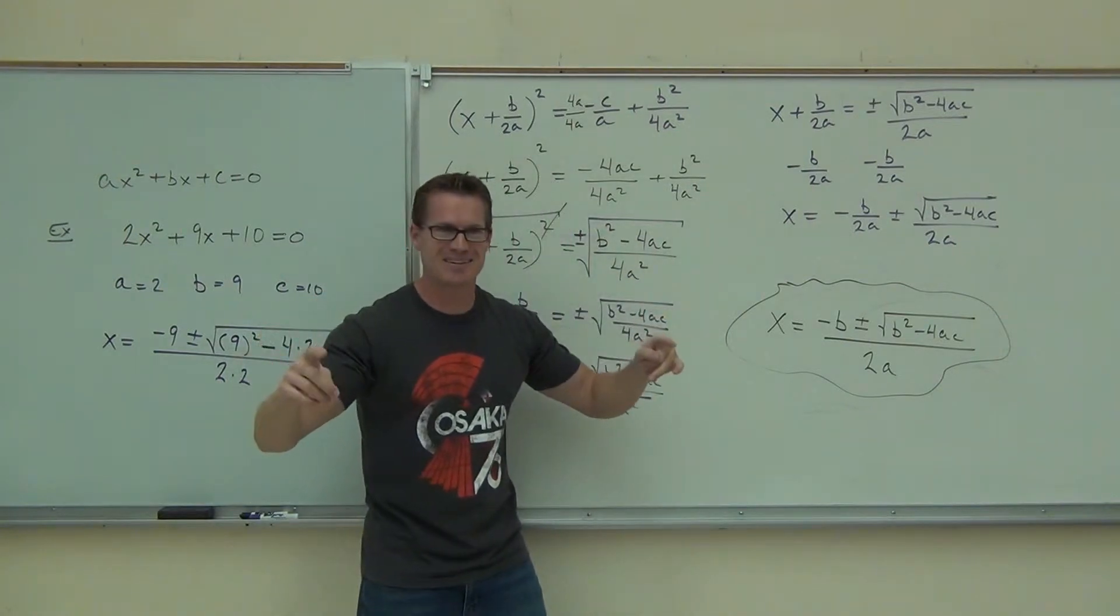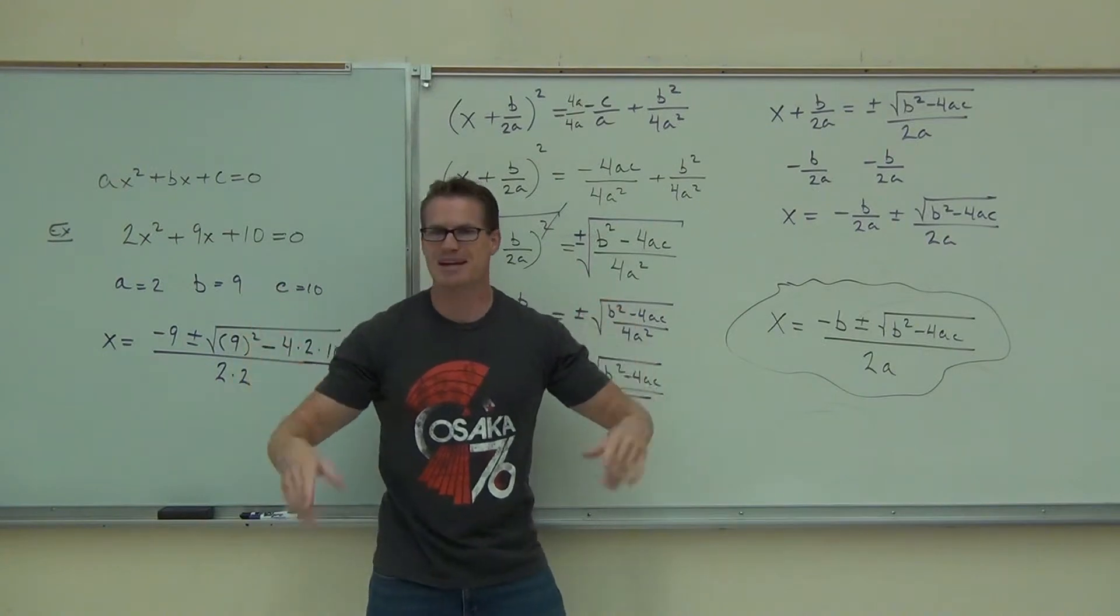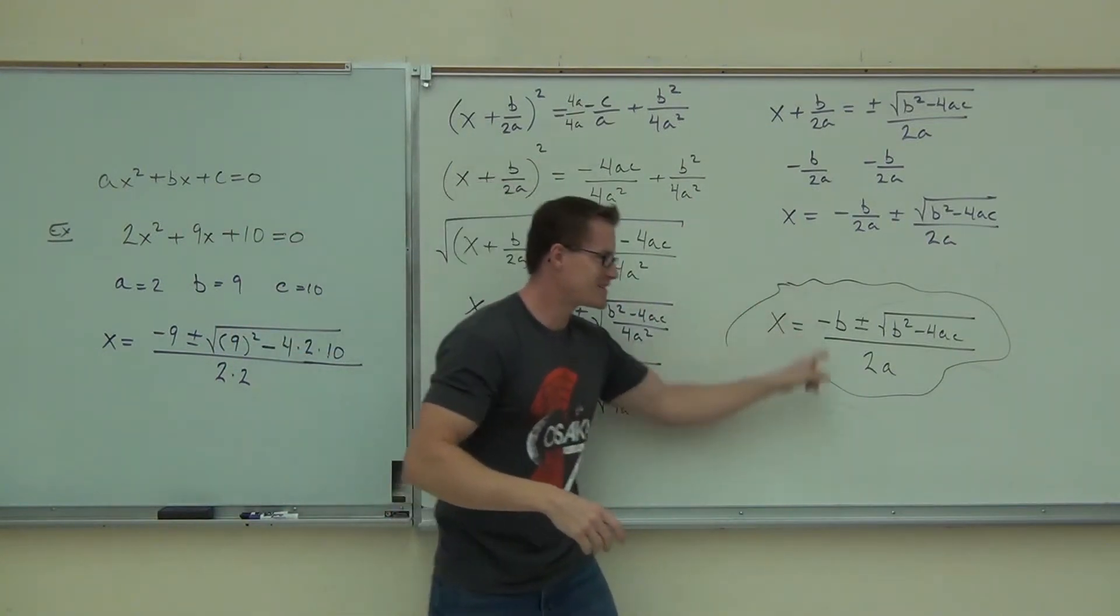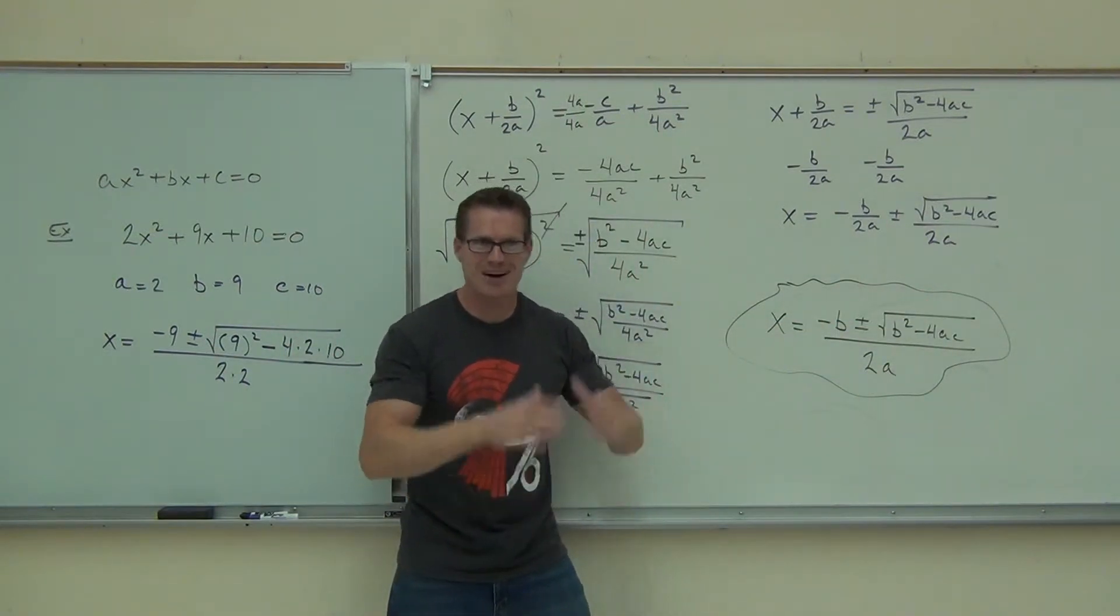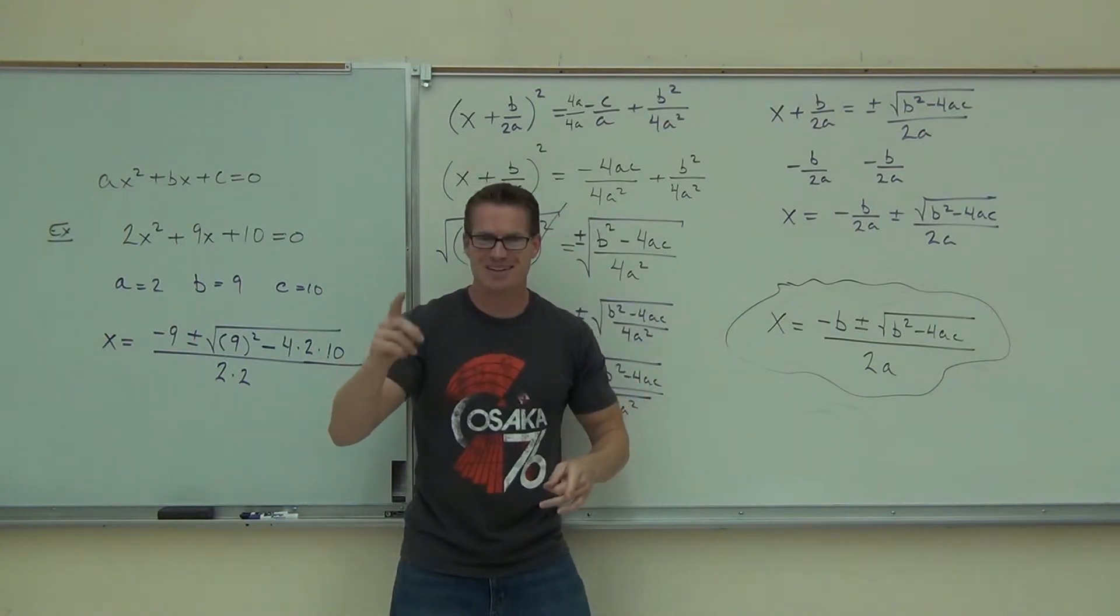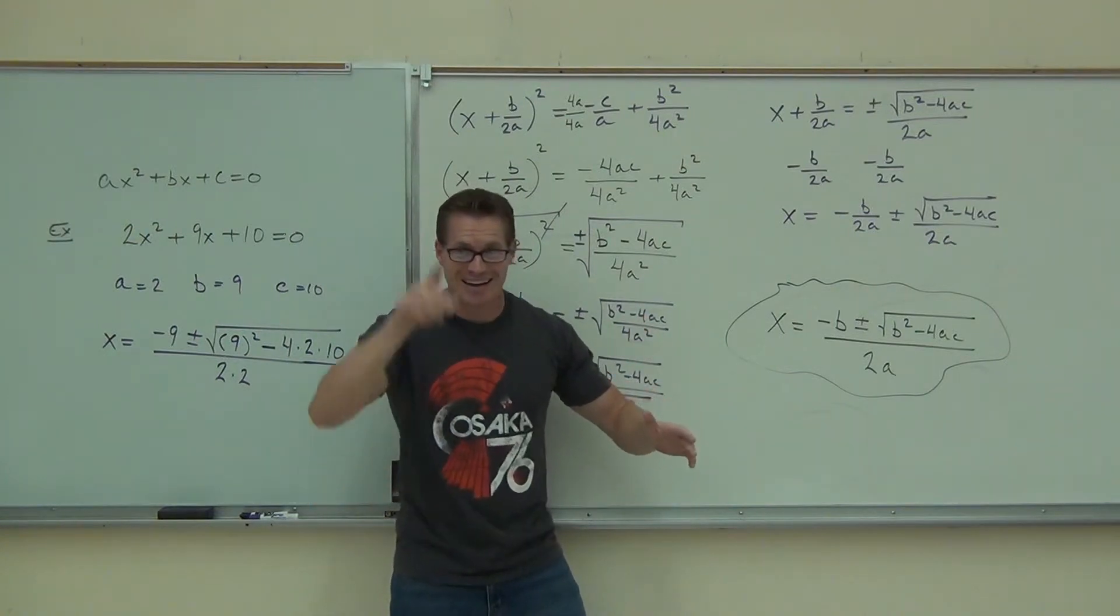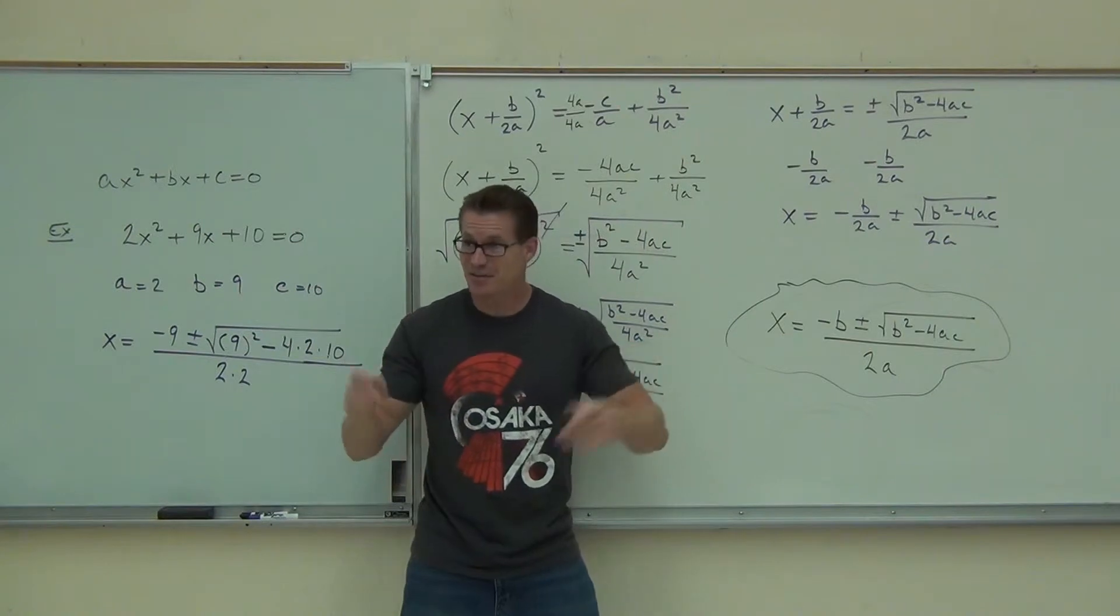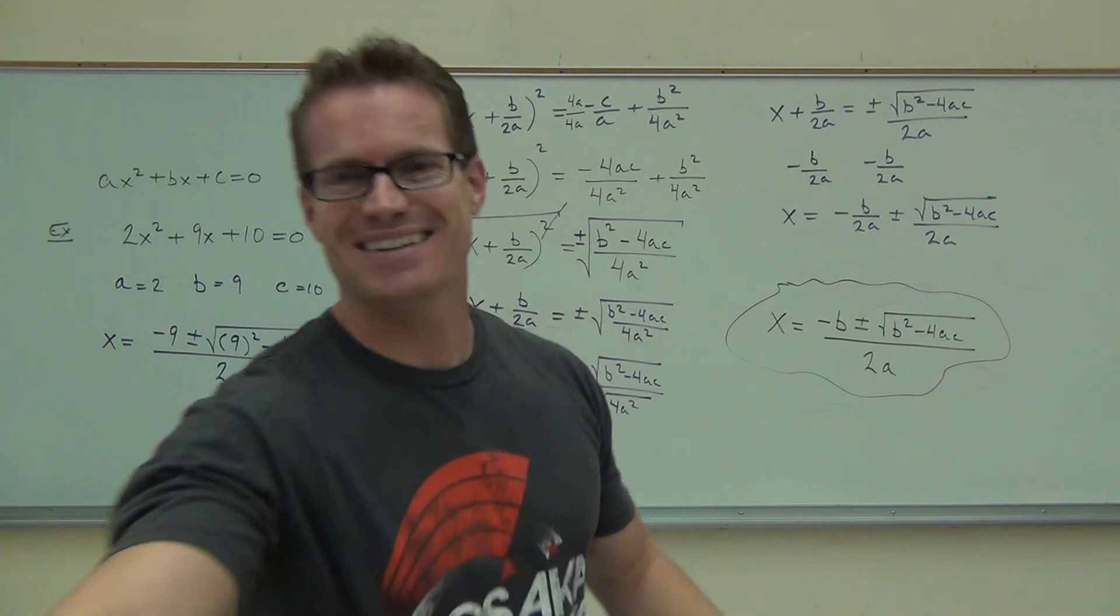You like it? Now we'll do it together. Ready? One. Are you ready? The words are here. Let's try it. One, two, three. X equals minus B, plus or minus radical. B squared minus 4AC, all divided by 2A. One more time. I'll start you off. One more time. Ready? One, two. X equals minus B, plus or minus radical. B squared minus 4AC, all divided by 2A. It's not 2A, 2A.